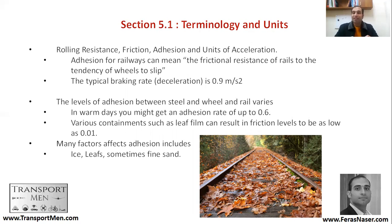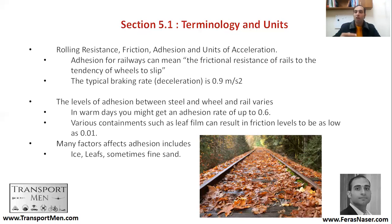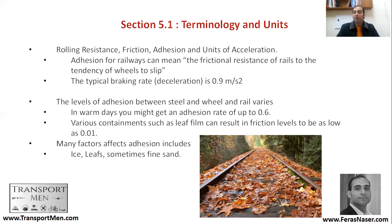To understand adhesion for railways, it is the frictional resistance of rails to the tendency of wheels to slip. Wheel slip and wheel spin are the results of poor adhesion. With wheel spin, you have a train rolling the wheel but the wheel is not moving forward. With wheel slip, you have a train trying to brake but it slips instead of slowing down — the driver loses control, and you can feel this in cars as well.